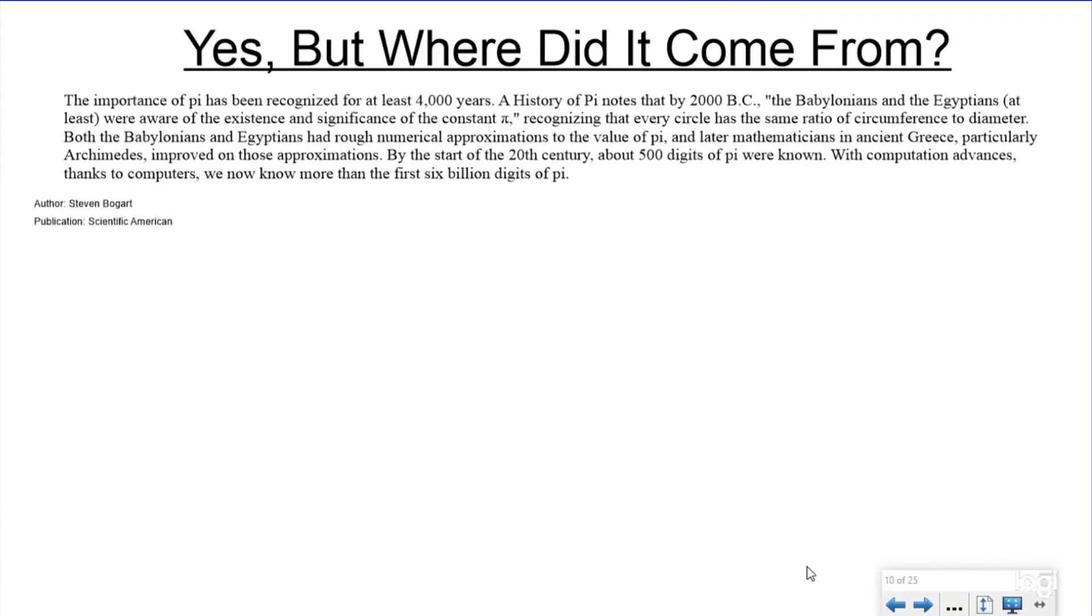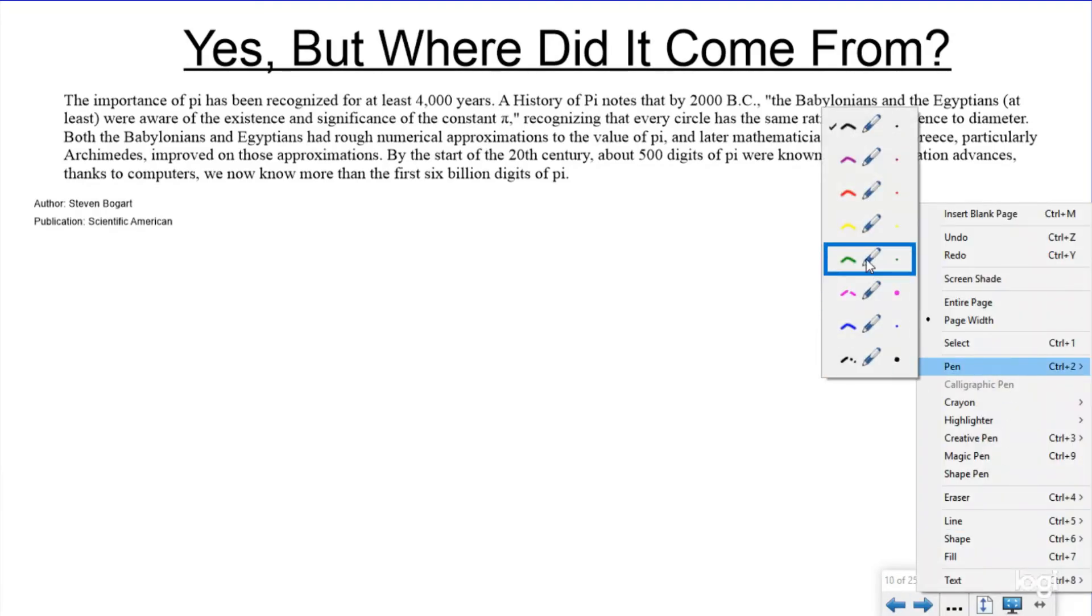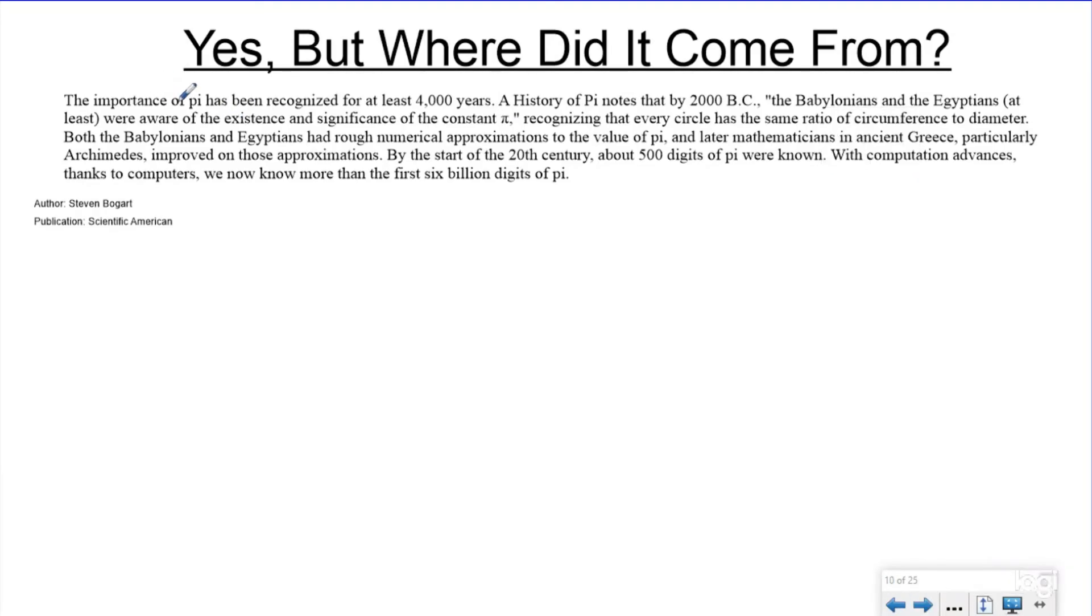So yes, I get it. It's a ratio. You just showed it to me with the circle. It doesn't matter how big the circle is, but where did it come from? Who came up with this pi? And so this is a clip from an article by Steven Bogert from the Scientific American. So I'm not plagiarizing. I'm not claiming it as being mine. And so the importance of pi has been recognized for at least 4,000 years. The history of pi notes that by 2000 BC, the Babylonians and Egyptians were aware of the existence and the significance of a constant.